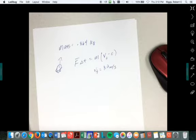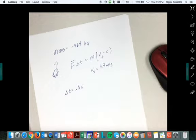Now watch. So let's say that it took me 0.3 seconds to throw the ball up in the air. Delta T is equal to 0.3 seconds.